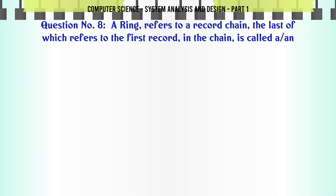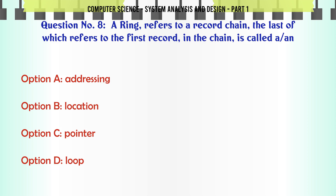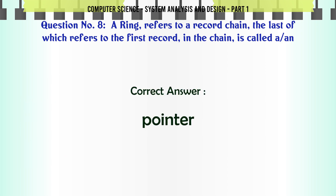A ring refers to a record chain, the last of which refers to the first record in the chain. This is called: A. Addressing. B. Location. C. Pointer. D. Loop. The correct answer is: Pointer.